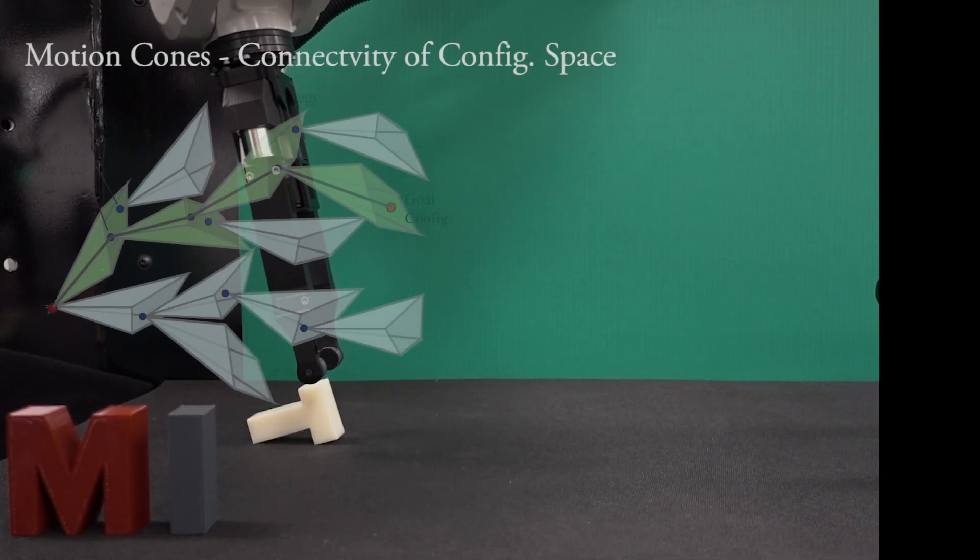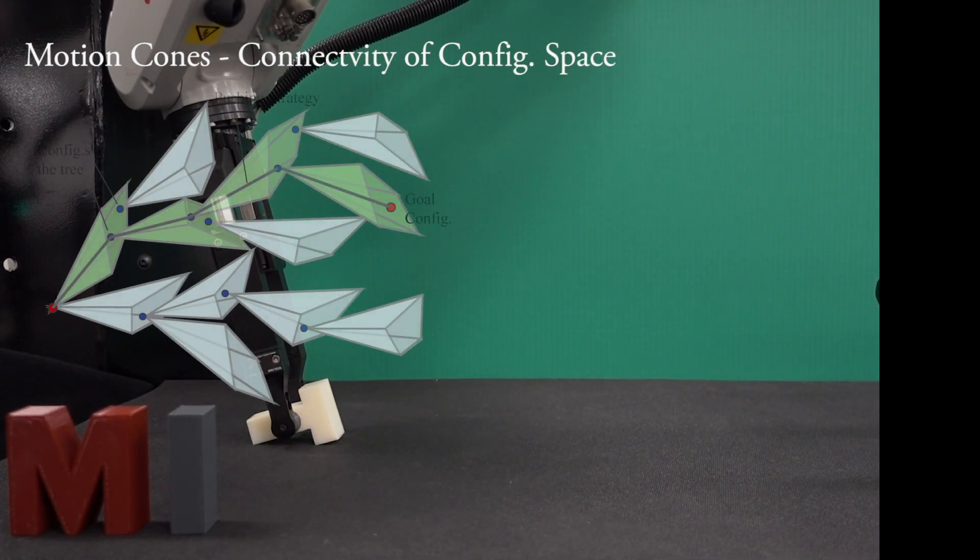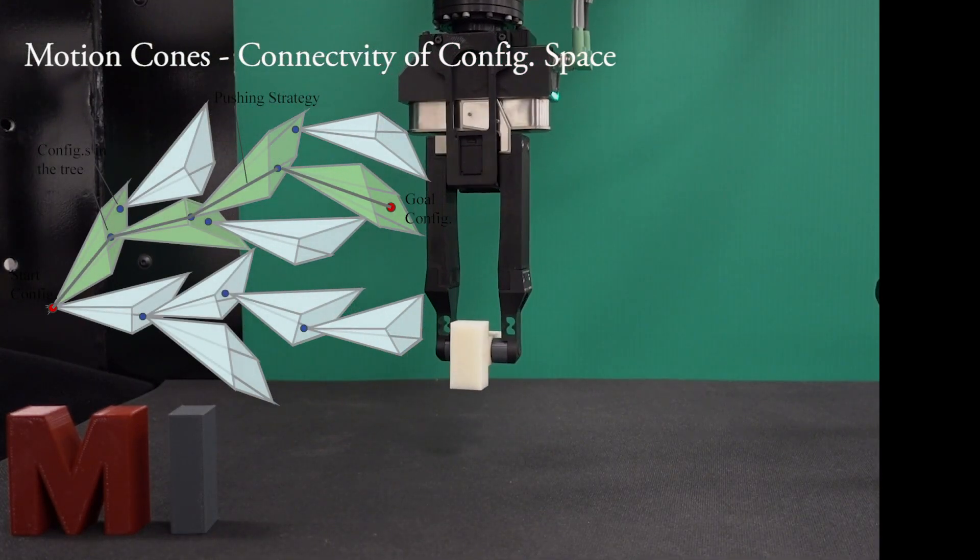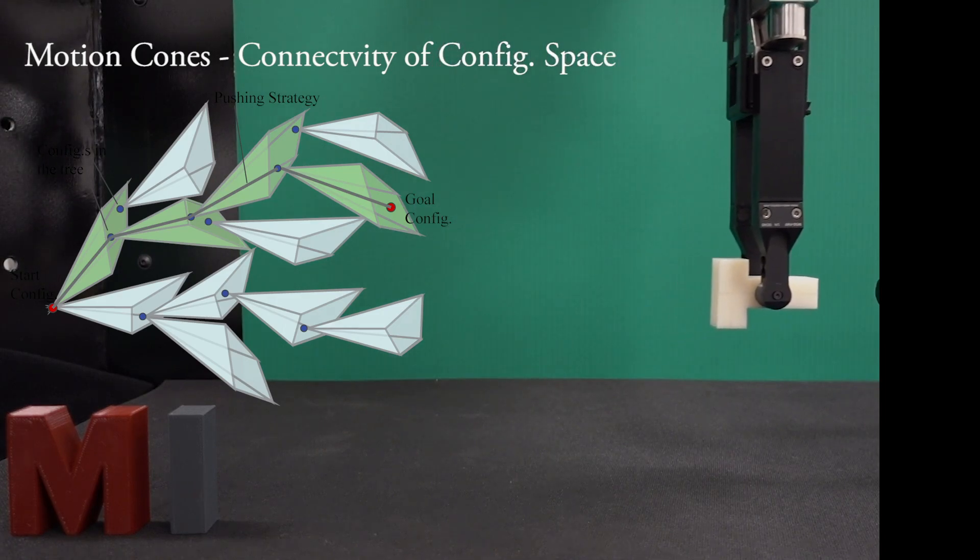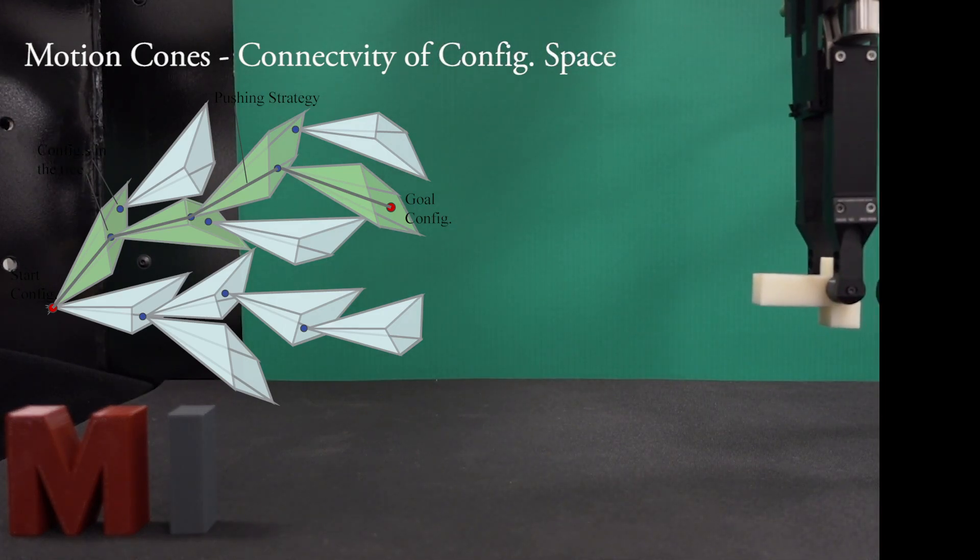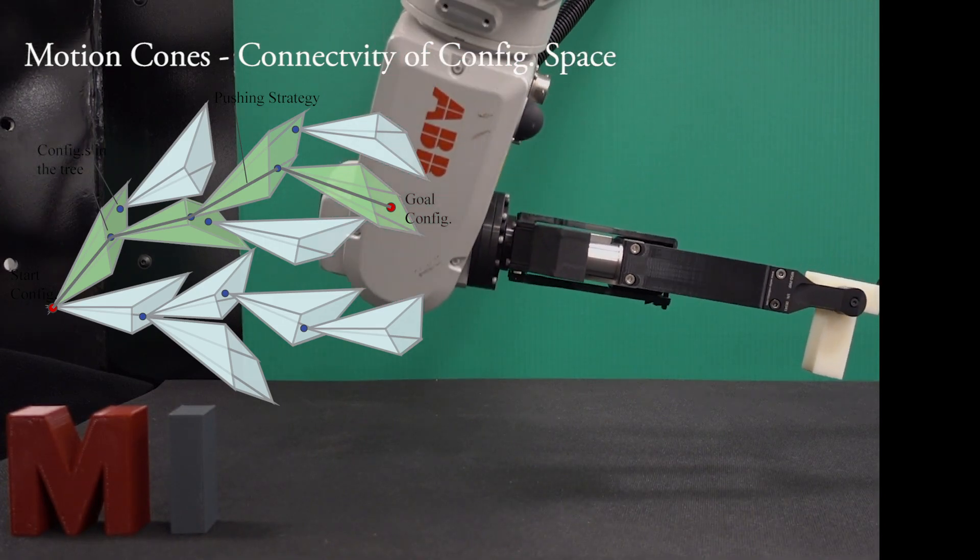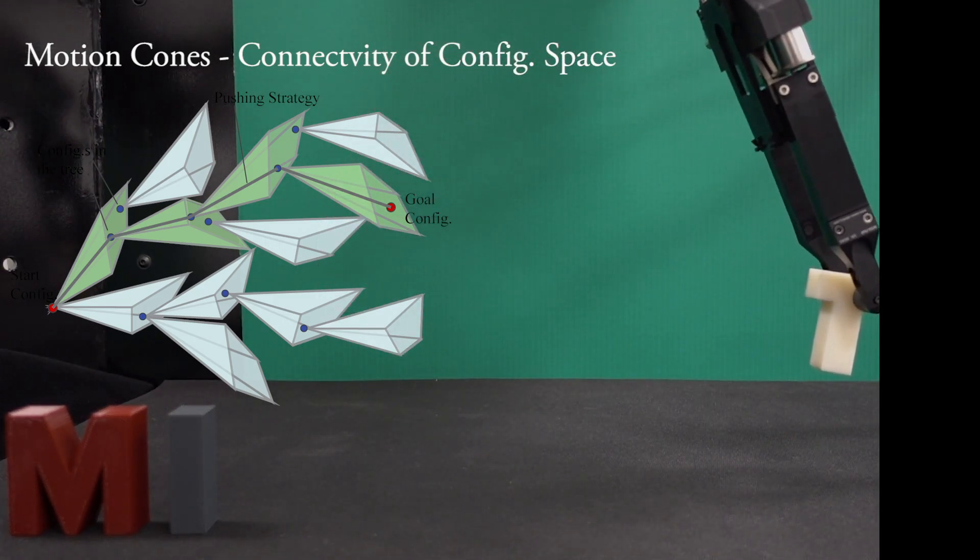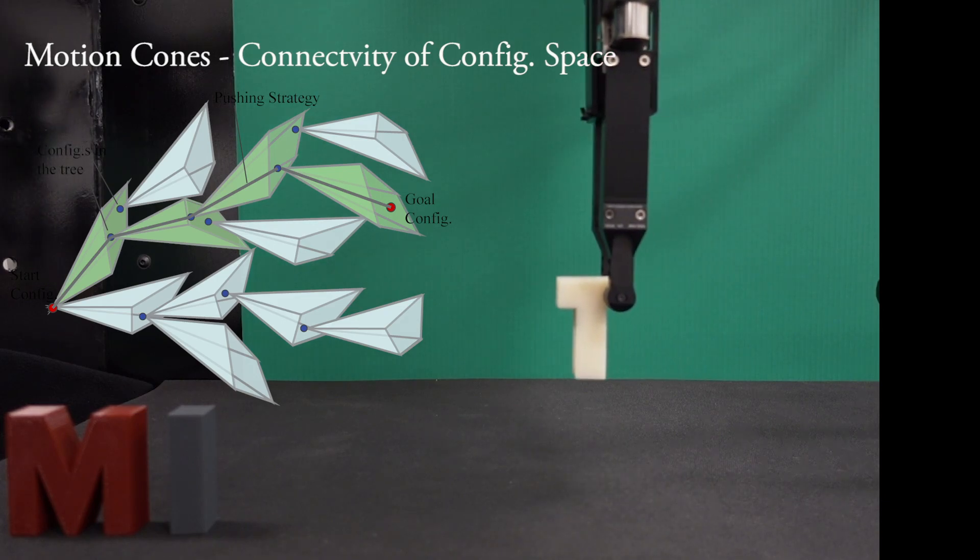We believe that using motion cones as reachable regions directly in the configuration space is a powerful idea for contact-based manipulations. This reachability knowledge opens a window to see the connectivity of the configuration space and use it for fast and efficient planning and control.